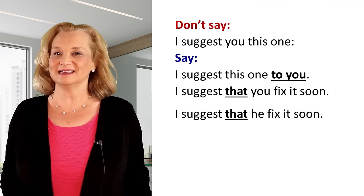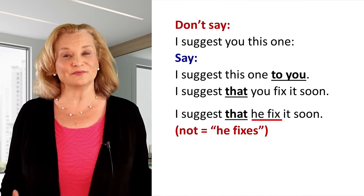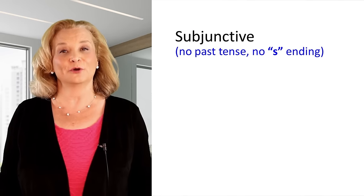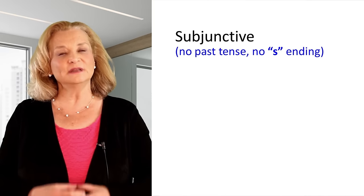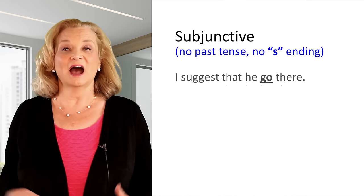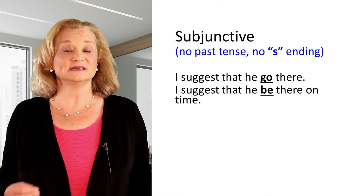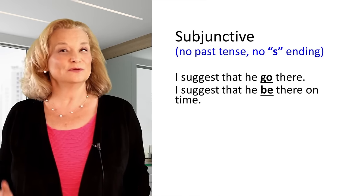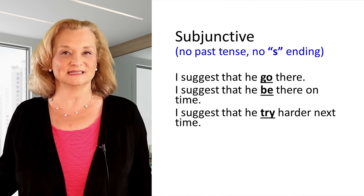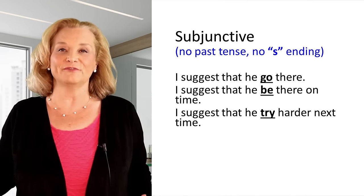Did you see what I did in that last sentence? I said "he fix" — I didn't say "he fixes." That's because the verb used with "suggest" must take the subjunctive form, and the subjunctive form is the infinitive form of the verb. So you can't change it to past tense and you don't add an S. So we say "I suggest that he go there," not "that he goes there." "I suggest that he be there on time" — we use "be," not "that he is." "I suggest that he try harder next time" — we don't say "he tries harder" because "suggest" requires the subjunctive form of the following verb.